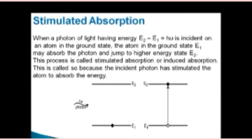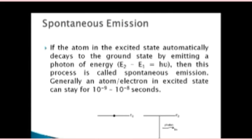Spontaneous emission: the excited atom in the excited state automatically decays to the ground state by emitting a photon of energy E2 minus E1, equal to h times nu. This process is called spontaneous emission. Generally, an atom or electron in the excited state can remain there for approximately 10 to the power of minus 8 to minus 9 seconds.